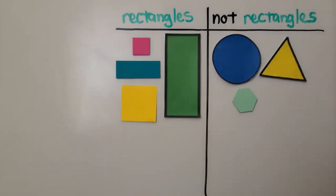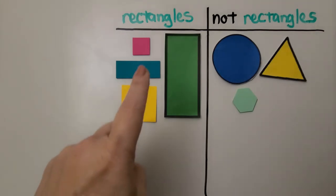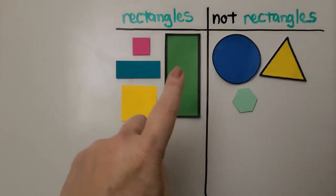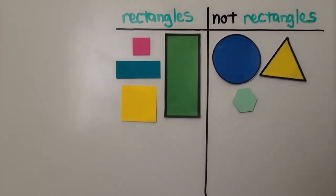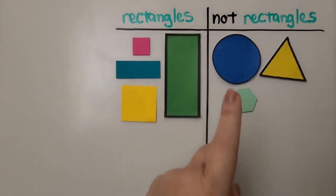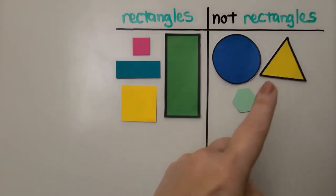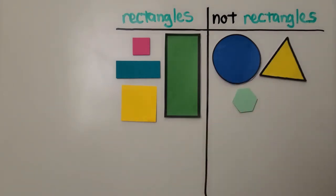It can go in the not rectangle section. So how many rectangles did we find? We found one, two, three, four rectangles, and we found one, two, three not rectangles.